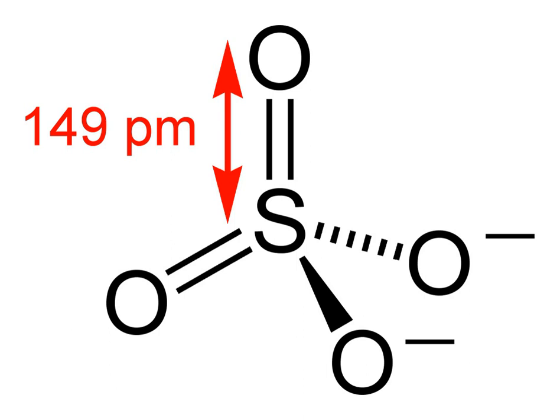The sulfate, or sulfate (see spelling differences), ion is a polyatomic anion with the empirical formula SO4(2-). Sulfate is the spelling recommended by IUPAC, but sulfate is used in British English. Salts, acid derivatives, and peroxides of sulfate are widely used in industry. Sulfates occur widely in everyday life. Sulfates are salts of sulfuric acid and many are prepared from that acid.